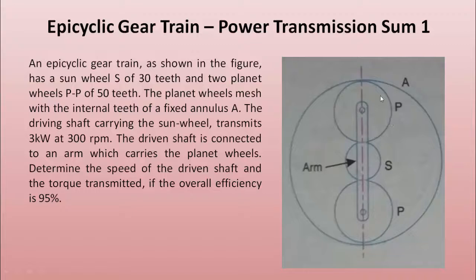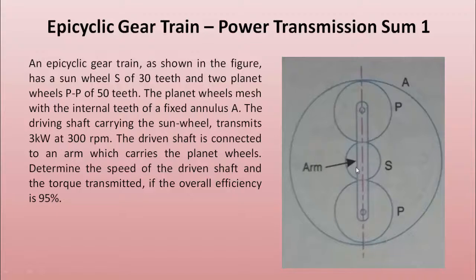So there is this sun gear, there is this planet gear, and there is this arm which is connecting the sun and the planet gears, and there is this outer annular gear. The planet gears have 50 teeth, sun has 30 teeth, and it is a fixed annulus — A is fixed. The driving shaft carries the sun wheel, transmitting 3 kilowatt power at 300 RPM.